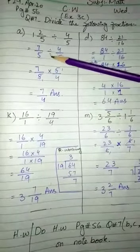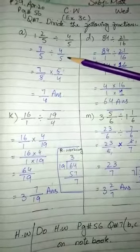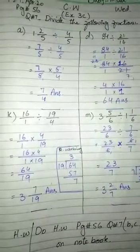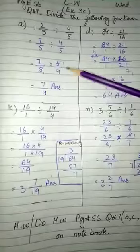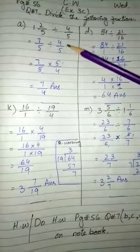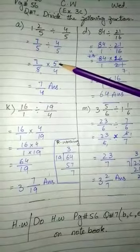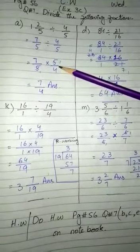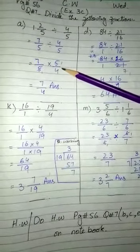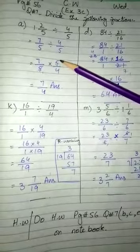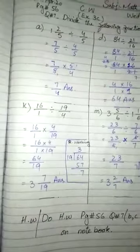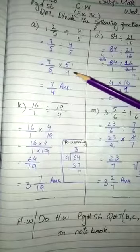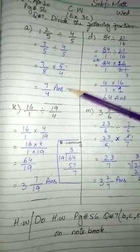When we write the next fraction, divide sign becomes multiply sign, and the second fraction we flip - numerator becomes denominator and denominator becomes numerator. So 4/5 becomes 5/4. Now we have 7/5 multiply 5/4. We can cancel: 5 and 5 cancel out to 1. Now we have 7 times 1 over 1 times 4, which equals 7/4.